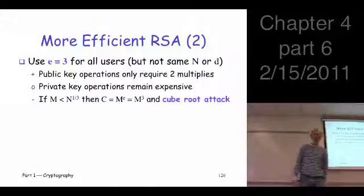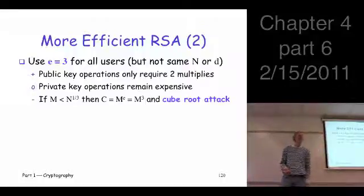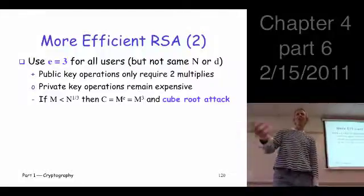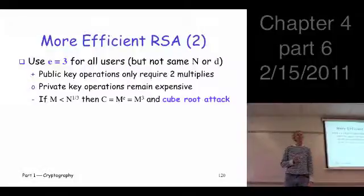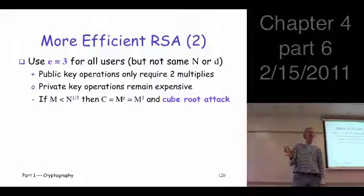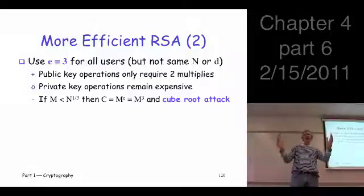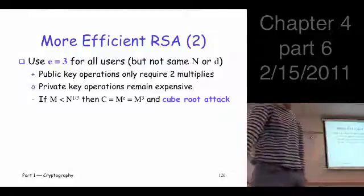And that, we'll call that a cube root attack. How do we prevent that attack? Pad the message. We already have to pad the message. Why do we pad the message? Why did we say to do that before? To prevent the forward search attack. So we already have to pad the message. As long as we're padding the message, we can make it so the number always, as a number, it's always large enough to prevent this. But you still should be aware that, you know, this is a possibility.